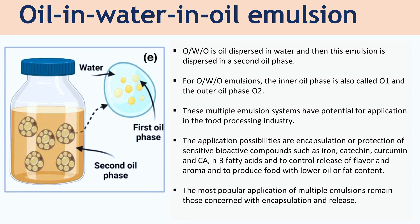These multiple emulsion systems have potential for application in the food industry. The application possibilities include encapsulation or protection of sensitive bioactive compounds such as iron, curcumin, and fatty acids, and to control the release of flavor and aroma, and to produce food with lower oil or fat content. The most popular application of multiple emulsions remains those concerned with encapsulation and release.